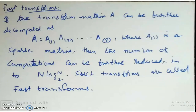The next topic is fast transforms. If the transform matrix A can be decomposed as A = A_1·A_2·...·A_i, where each A_i is a sparse matrix, then the number of computations can be further reduced to O(N log₂ N). Such transforms are called fast transforms. An example we have seen in earlier courses — in digital signal processing — is the Fast Fourier Transform (FFT).